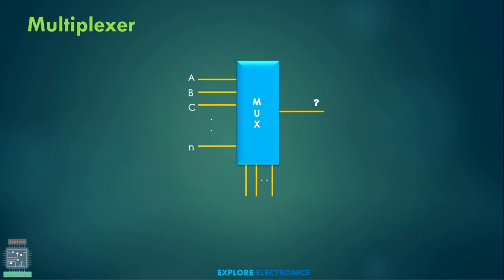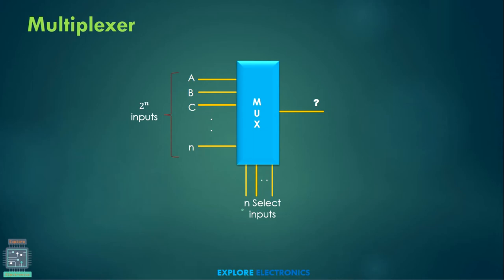What is a multiplexer? A multiplexer is a digital circuit having many inputs and a single output. This multiplexer will generally have 2^N inputs, and for these 2^N inputs we need N select inputs. These select lines are also considered as inputs to select one output out of these inputs.